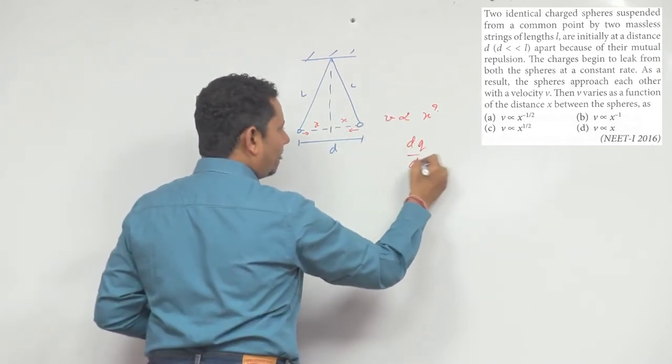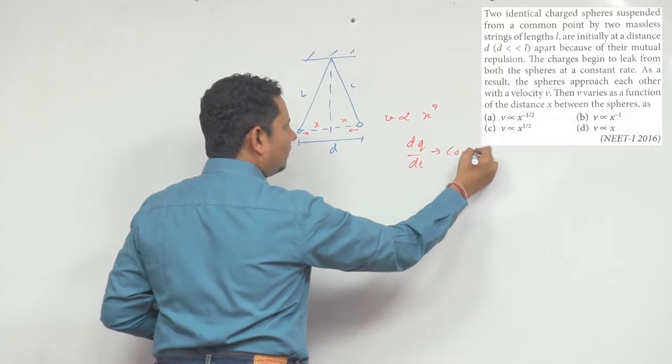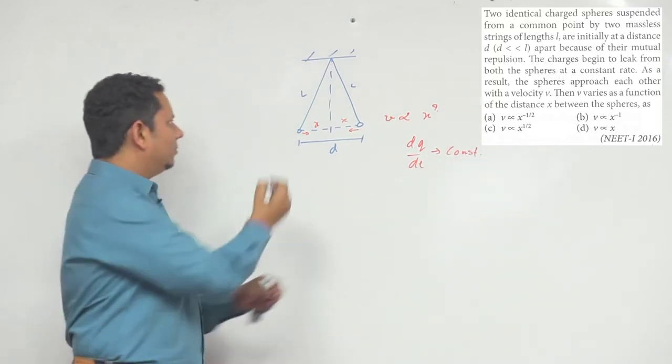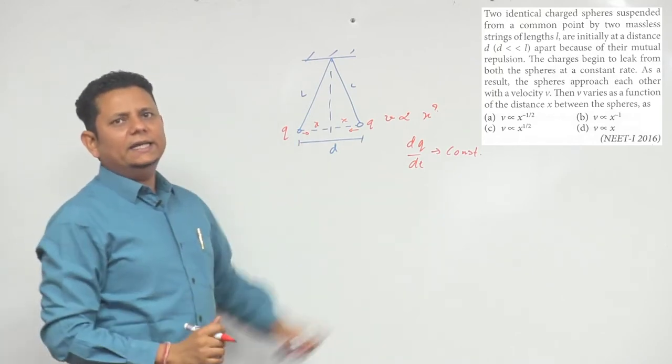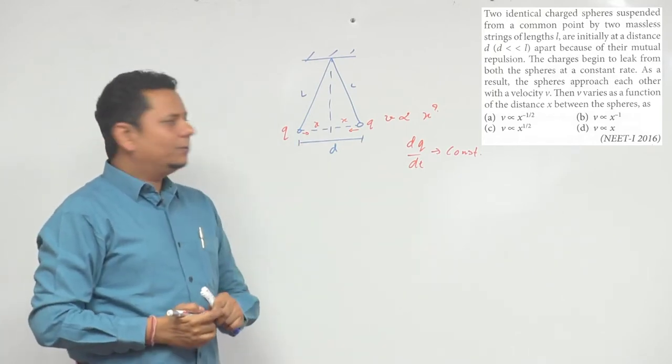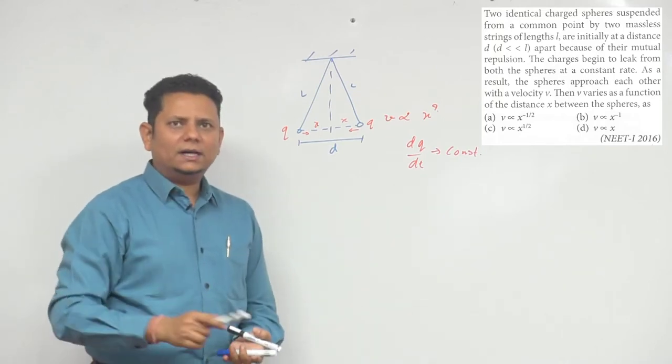dq by dt is what? The charge q on this, the charge q on this, which is decreasing - the charge that is leaking - its value is given to you as constant.